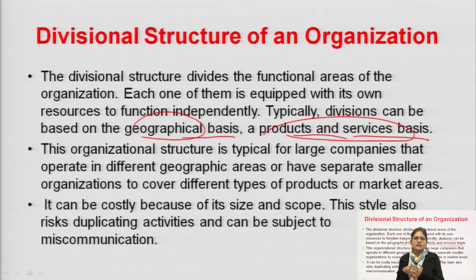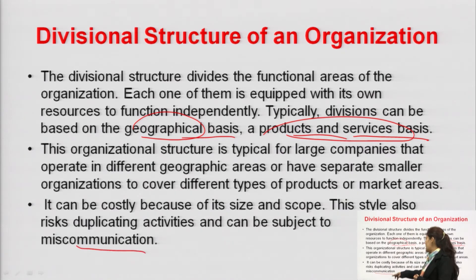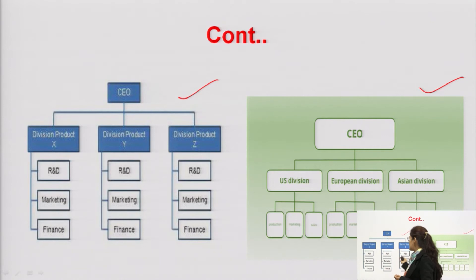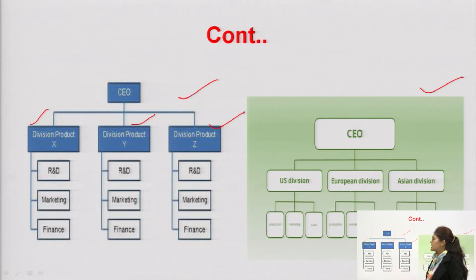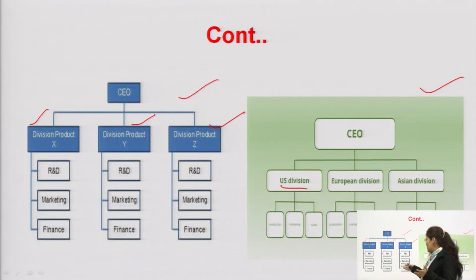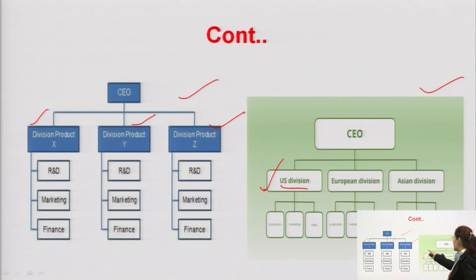As the organization is large in nature and spread across a whole country, there are chances of miscommunication and duplication of activity, and it is costly because the organization is large in size. In the divisional structure hierarchy, the whole organization is divided on the basis of product — product X, product Y, and product Z. If the organization deals multinationally, divisional structure would exist based on geography — for example, US division, European division, and Asian division.